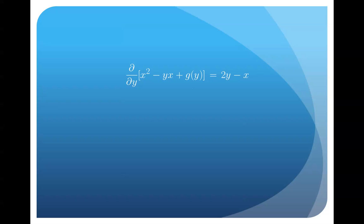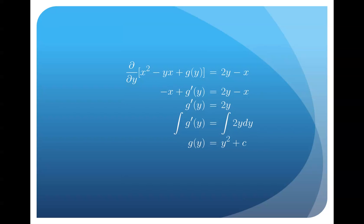And on the left side, we need to calculate the derivative with respect to y. So we should get negative x plus g prime of y. And if we continue to solve for g prime of y, we'll get that g of y is equal to y squared plus c.